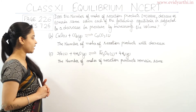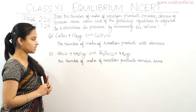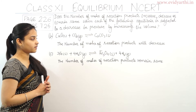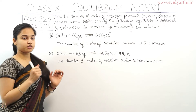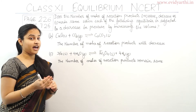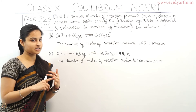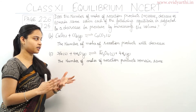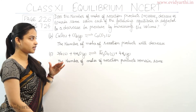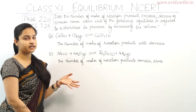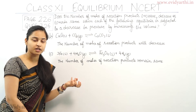Coming to part C: the reaction is 3Fe(s) + 4H2O(g) ⇌ Fe3O4(s) + 4H2(g). In this case, the number of moles of gases in the product side is 4, and the number of moles of gases in the reactant side is also 4. Since they are equal, the number of moles of reaction product will remain the same.